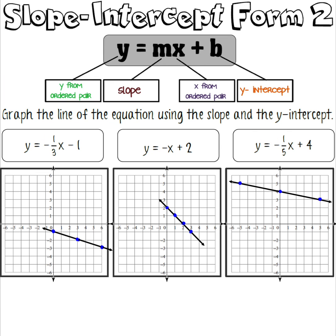For the last three: y equals negative one third x minus one has a y-intercept of negative one and slope of negative one third — down one over three, repeated. The next has a y-intercept of positive two and a slope of negative one — down one over one, repeated. Lastly, a y-intercept of positive four and a slope of negative one fifth — down one over five. We only have two points so reverse and go up one over five the other direction to complete the line. Make any changes necessary and you are ready to move on.